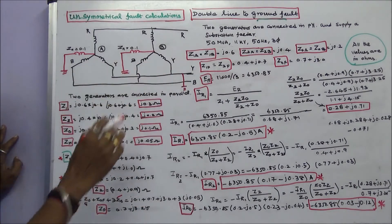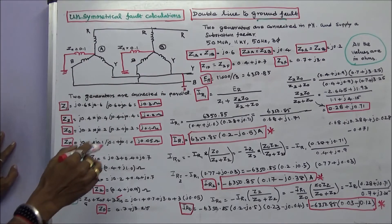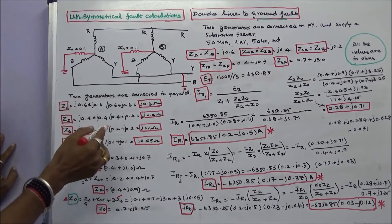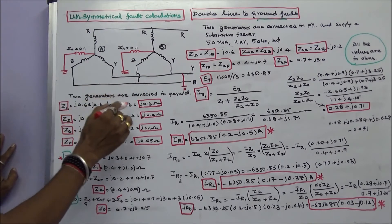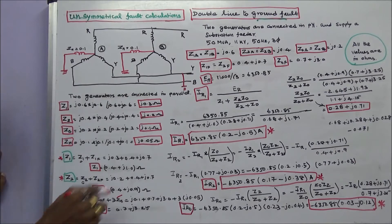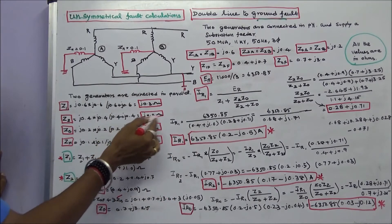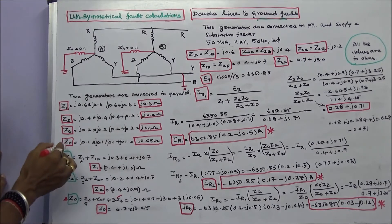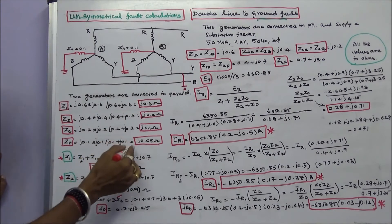When the two generators are connected in parallel, we calculate the equivalent impedance. The positive sequence impedance Z1 equals J0.6 times J0.6 divided by J0.6 plus J0.6, which equals J0.3 ohms. Similarly, Z2 equals J0.4 times J0.4 divided by J0.4 plus J0.4, which equals J0.2 ohms. Z0 equals J0.1 ohms. Zn equals J0.1 times J0.1 divided by J0.1 plus J0.1, which equals J0.05 ohms.